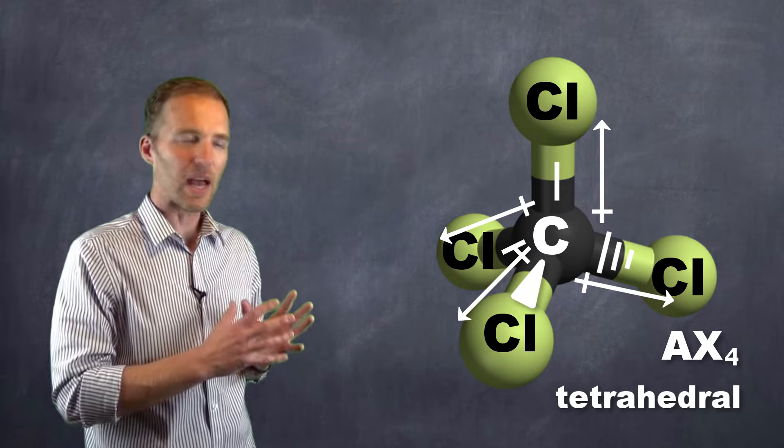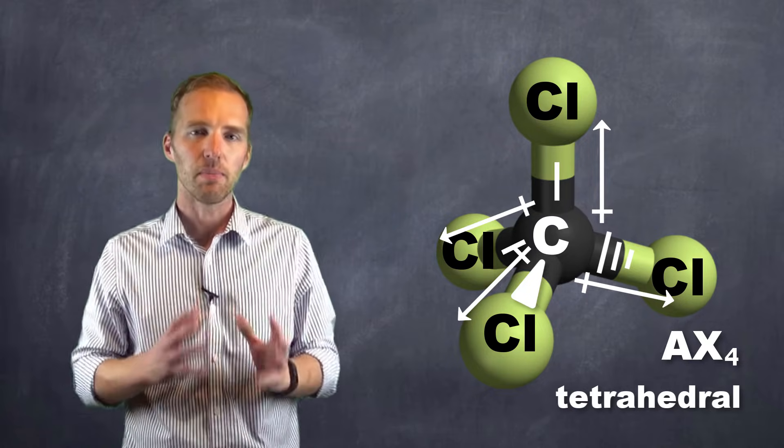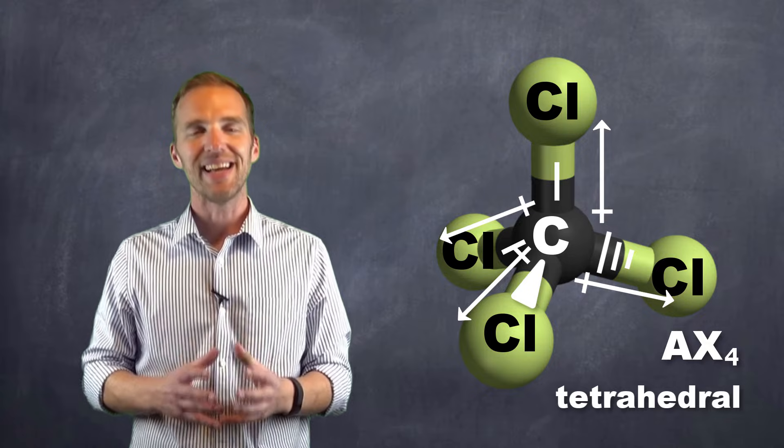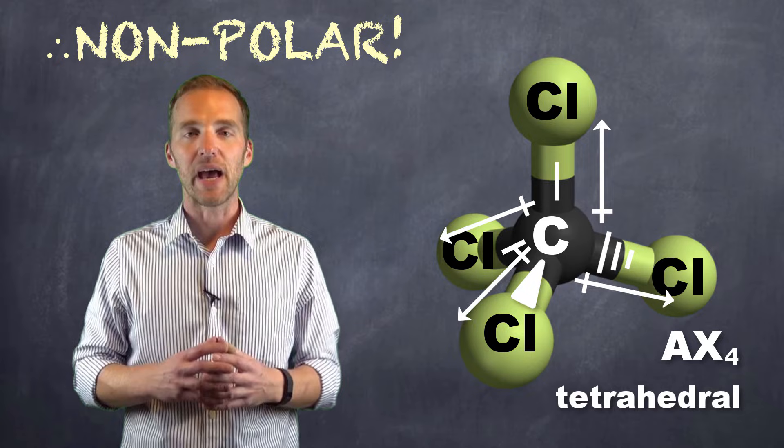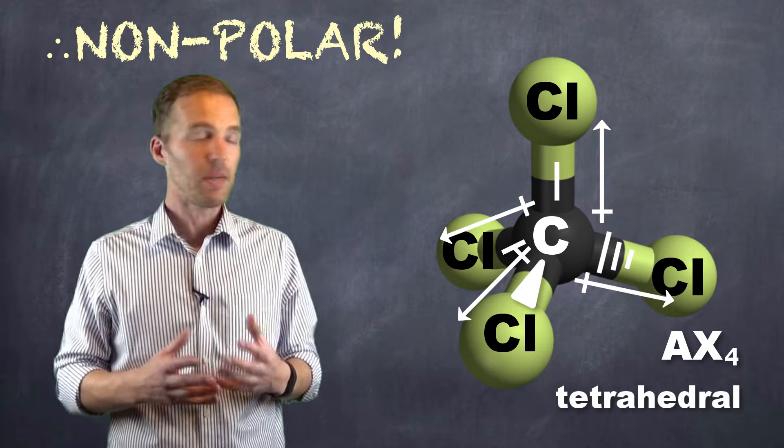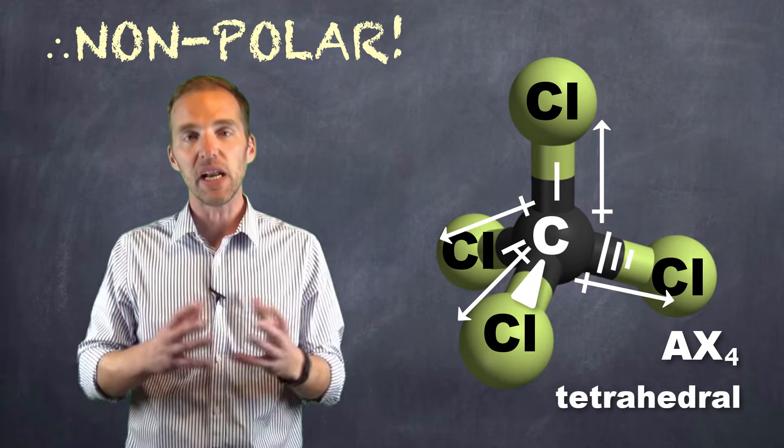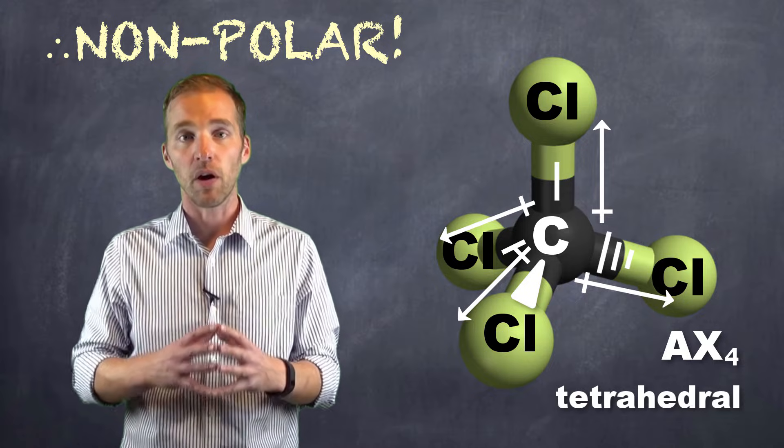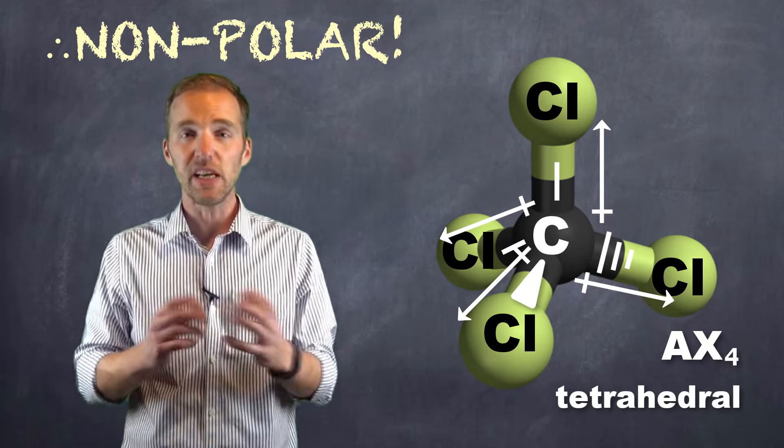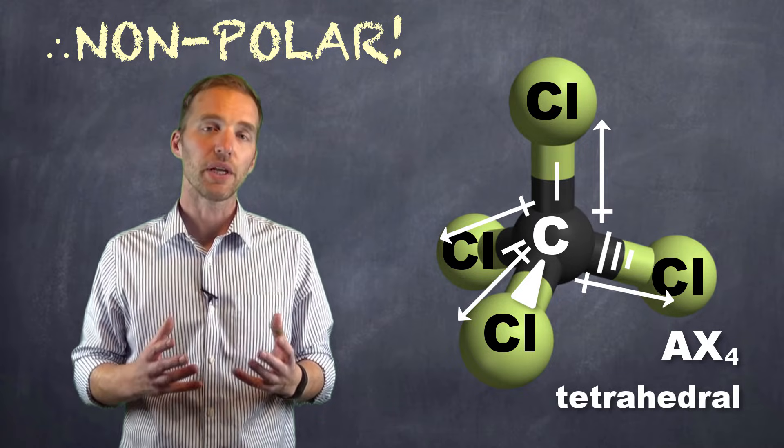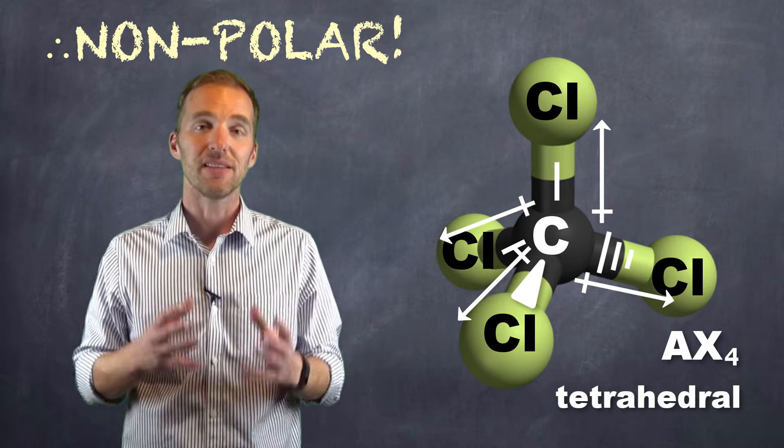So even though, again, we have highly polar bonds here, the molecule, due to its symmetry, is not itself a polar molecule. So what we have to remember is that all of these parent shapes, because they're symmetrical, if any of these bonds are the same, and that is they cancel each other out in terms of their dipoles, even if all of the bonds are polar, the molecule itself, due to its symmetry, is non-polar.